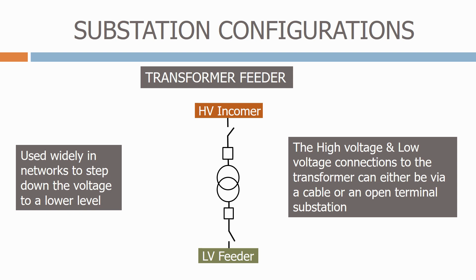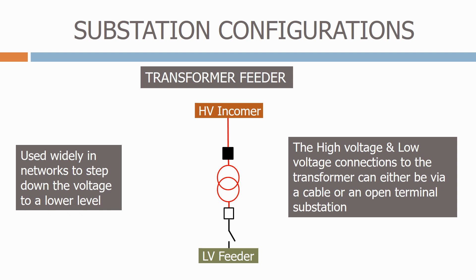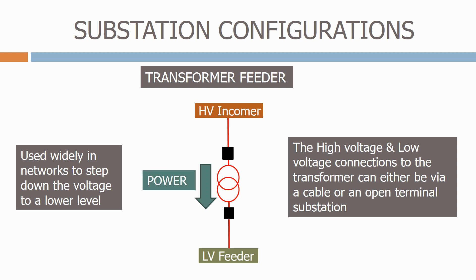Let's see how this circuit works in practice. We can see that the high voltage incomer is now live. We close the isolator on the incomer before closing the incomer circuit breaker, which now energises the transformer. We then close the low voltage circuit breaker — again closing the isolator before closing the circuit breaker. Power is now flowing from the high voltage incomer through the transformer and through the low voltage feeder.